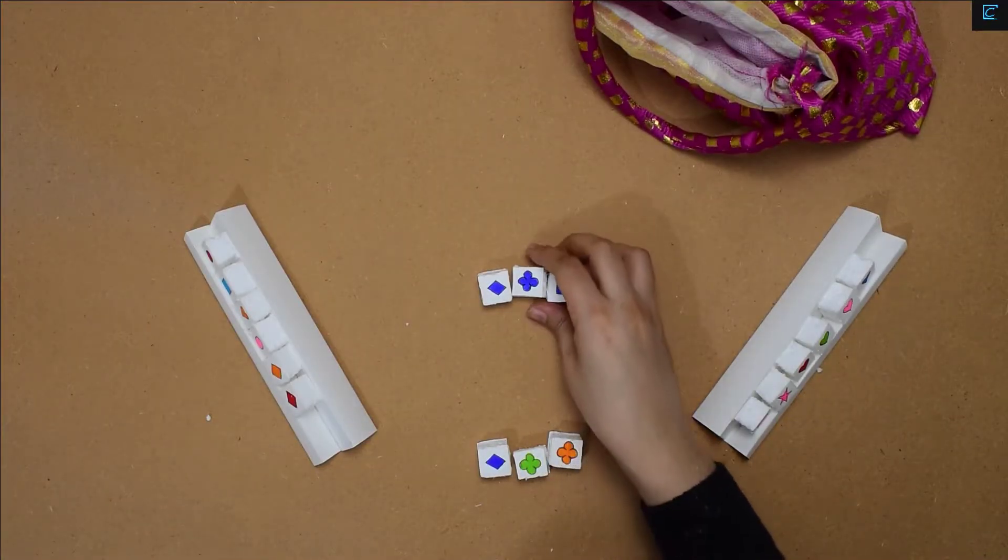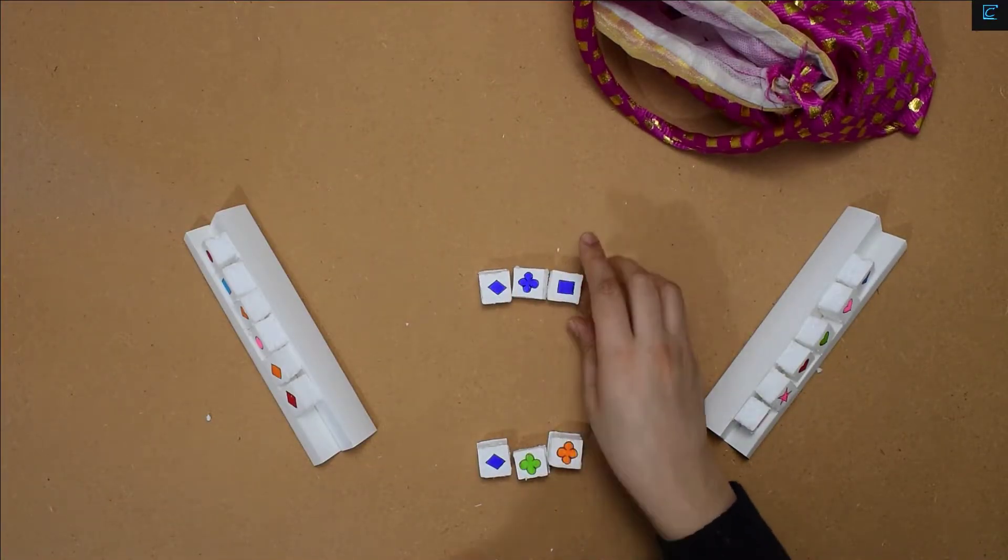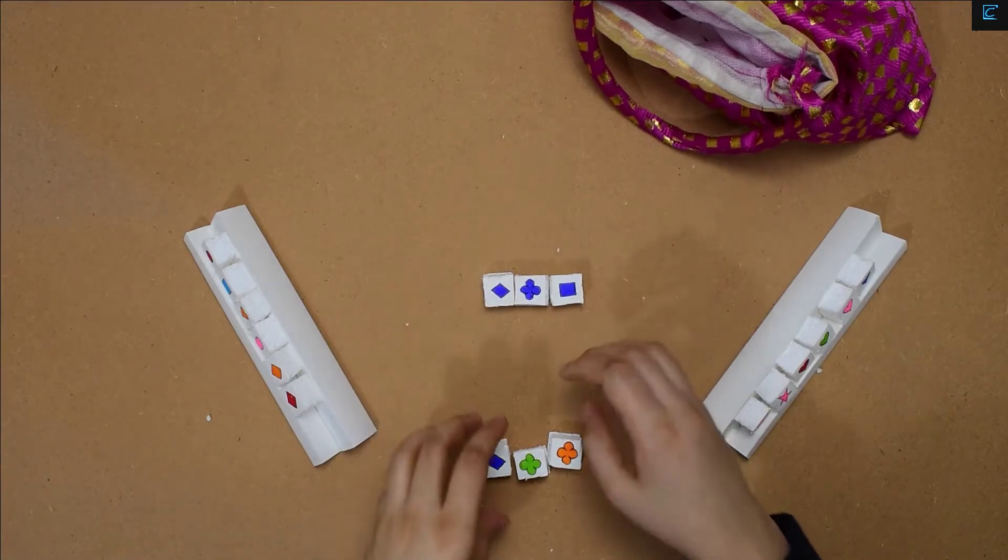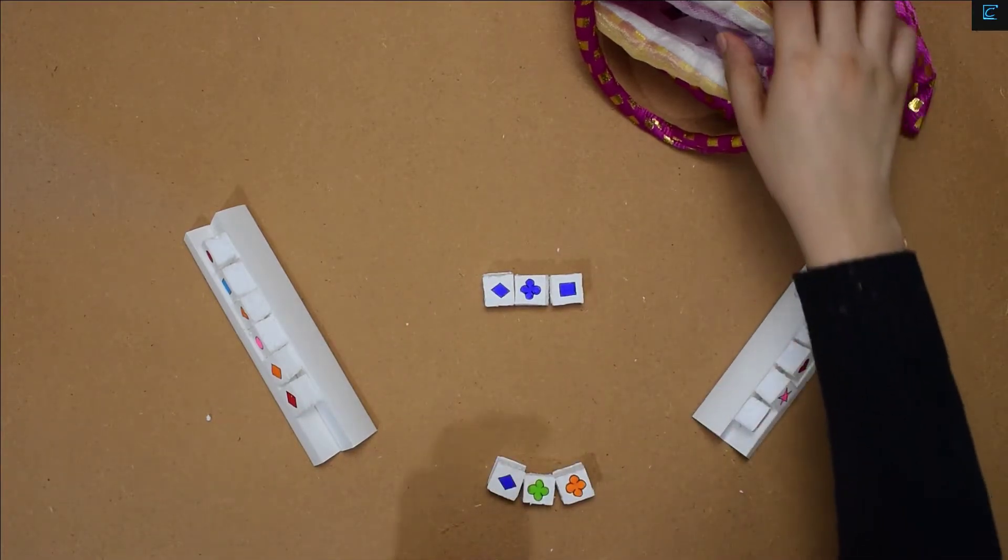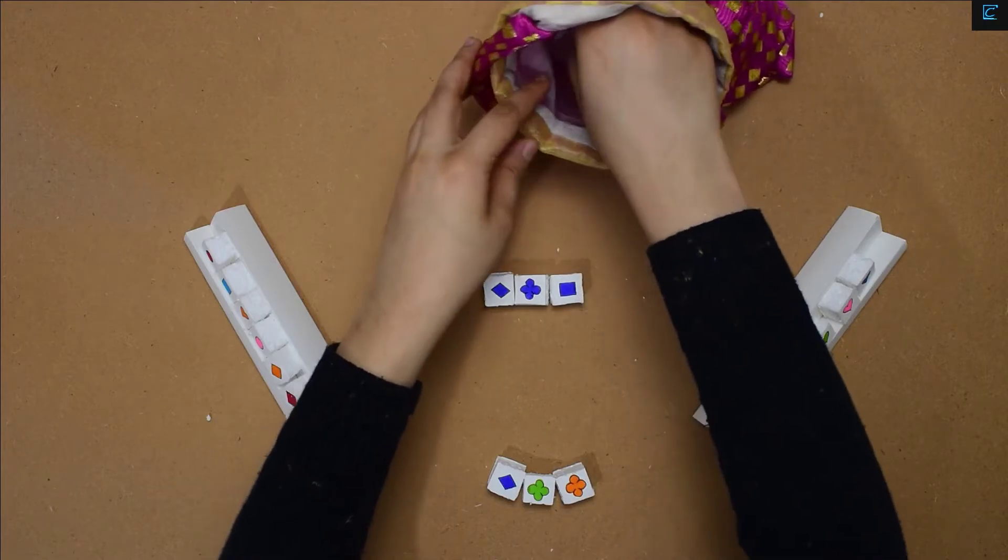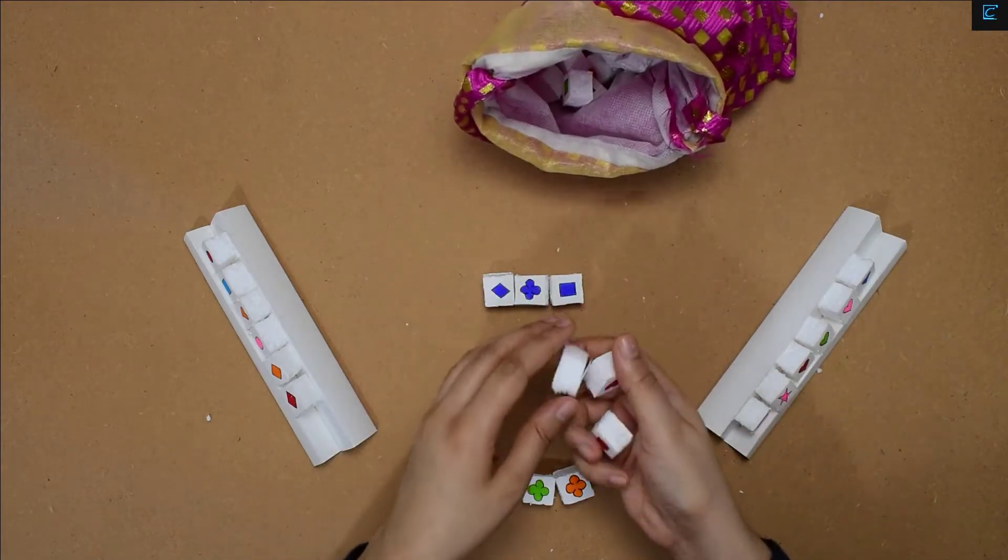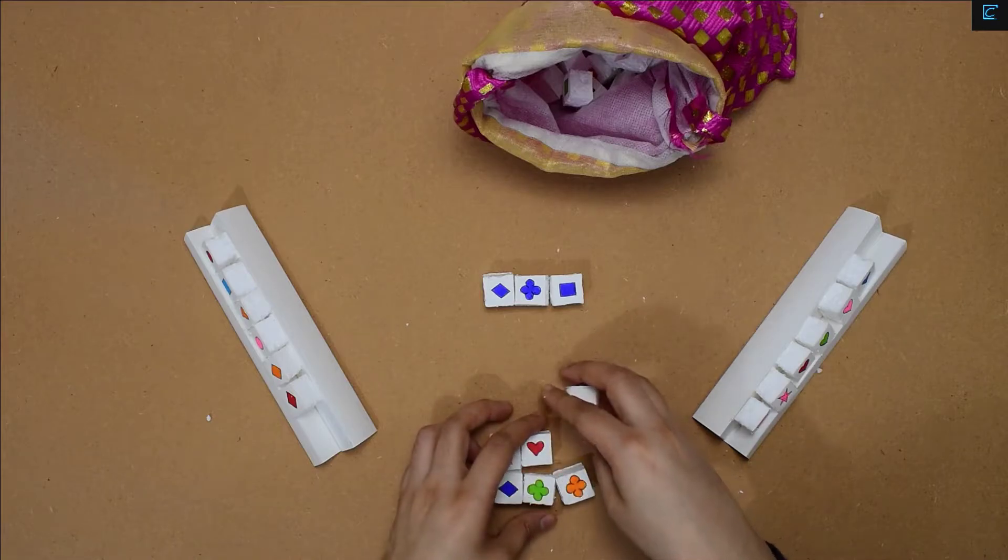Players get one point for each tile they place. After placing the tiles, you draw the same quantity from the bag so that you have six tiles always in your hand.